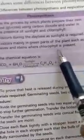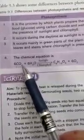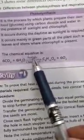It occurs during the daytime because sunlight is required. It occurs mainly in the green parts of a plant such as leaves and stems where chlorophyll is present. Chlorophyll is necessary for the process of photosynthesis. The chemical equation is 6CO2 + 6H2O gives, in presence of sunlight and chlorophyll, C6H12O6 + 6O2.